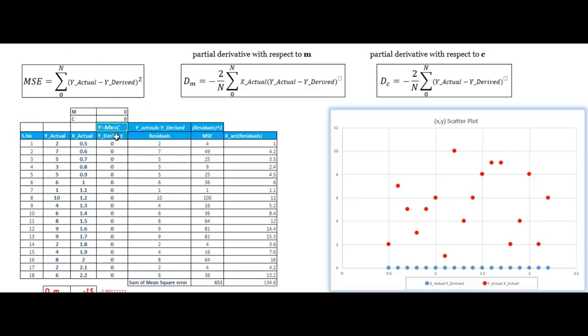So first, we will differentiate mean square error with respect to m. Then, we will differentiate again it with respect to c. So here, I have given the values what comes after differentiating this mean square error with respect to m and c. With respect to m, when we differentiate it, we get the value which is just a multiple of x actual multiplied by y actual minus y derived. We have already found out y actual minus y derived. Now, we have to just multiply these residuals with x actuals. In the table, I have added one more column which gives me the multiple of x actuals versus the residuals.